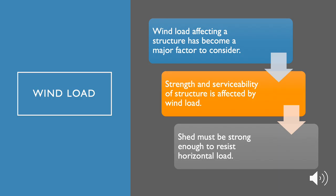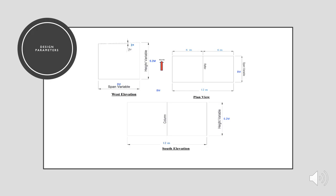The wind load affecting a structure has become a major factor to consider due to the widespread use of lighter materials and time-efficient construction techniques in present and future construction. The strength and serviceability of a structure are affected by wind load as it affects both the structure itself and the exterior cladding. The structure — in this case a shed — must be strong enough to resist the horizontal load, and there must be sufficient anchorage to prevent the shed from blowing away if the dead load is not adequate to hold it down.